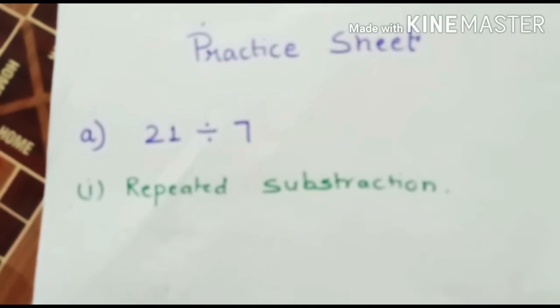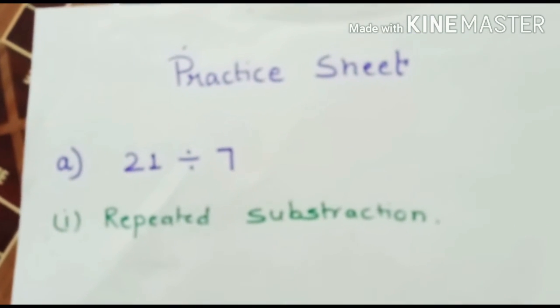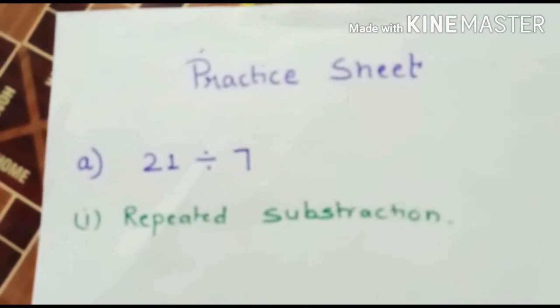As we discussed that division is repeated subtraction, let's see how to do it in this practice sheet. Let's take an example of 21 divided by 7.